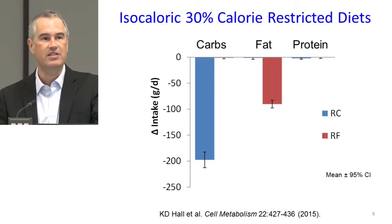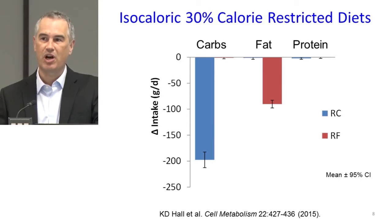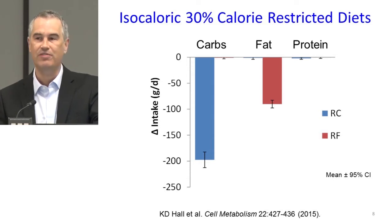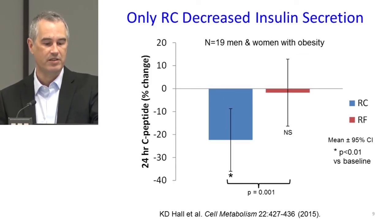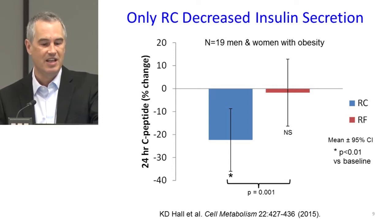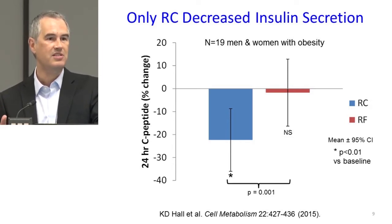One prediction from the carbohydrate-insulin idea is that only the reduced-carb diet should lead to a reduction in insulin secretion, since dietary fat doesn't play a big role in changing insulin secretion. And indeed, that's what we observed — the reduced-carbohydrate diet led to more than a 20% reduction in insulin secretion as measured by C-peptide excreted in the urine. C-peptide is a molecule co-secreted with insulin and cleared entirely by the kidney, so measuring it over 24 hours gives us a measure of how much insulin was secreted. So we had set the conditions up to test this idea: was insulin secretion reduction required to lose body fat?